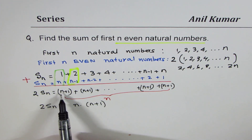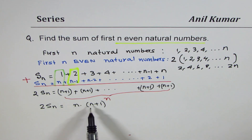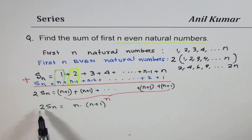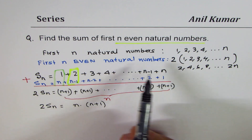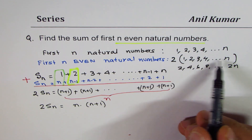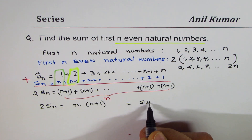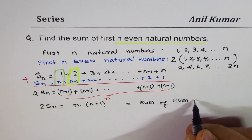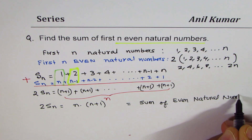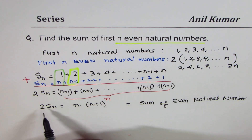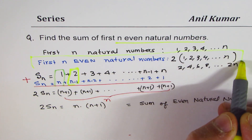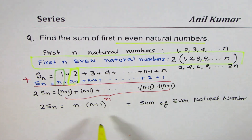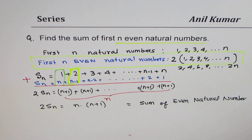So twice the sum of natural numbers is n·(n+1). The sum of first n even natural numbers is twice the sum of natural numbers, because even numbers are twice the natural numbers. So the sum of even natural numbers equals 2 times S_n, which gives us n·(n+1).